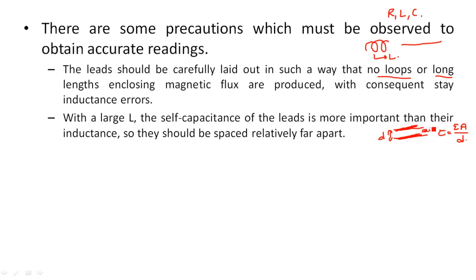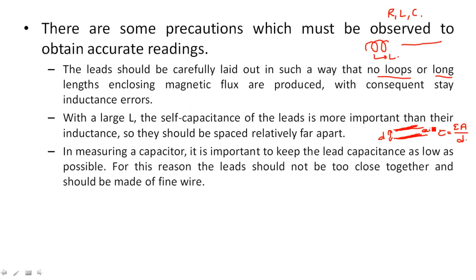This self-capacitance, or lead capacitance, is similarly important when measuring capacitance. We must keep lead capacitance as low as possible. If we don't control lead capacitance, it gets added to our measured value, making the result inaccurate. Capacitor values used in practice are very low — in the microfarad range, such as 0.5 μF or 1 μF — so any lead capacitance added will significantly affect the overall measured capacitance.